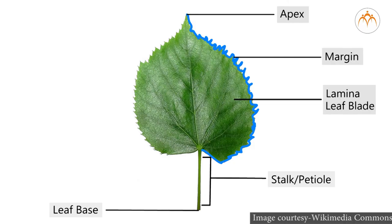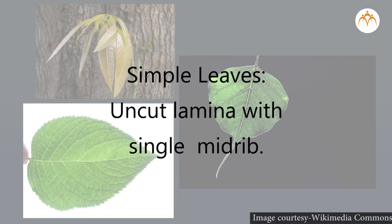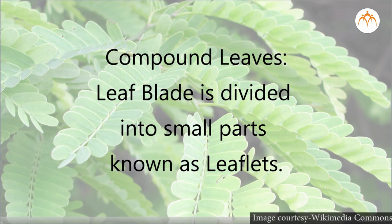Now let's quickly revise all the new concepts. Parts of a leaf: leaf base, petiole, stipules, and lamina or leaf blade. Functions of a leaf: to produce food by photosynthesis, exchange of carbon dioxide and oxygen, and loss of water through water vapor. Types of leaves: first is the simple leaf, in which the lamina is a single continuous surface — examples are mango, onion, and peepal. The second is the compound leaf, in which the lamina is divided into leaflets — examples are tamarind, rose, and curry leaves.